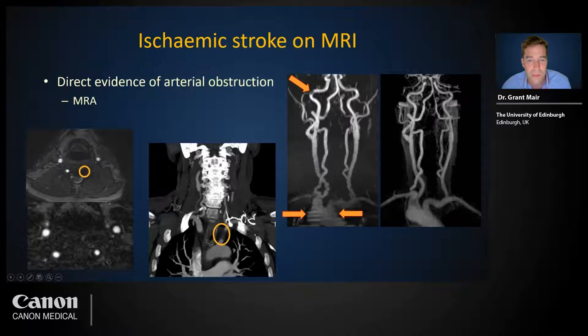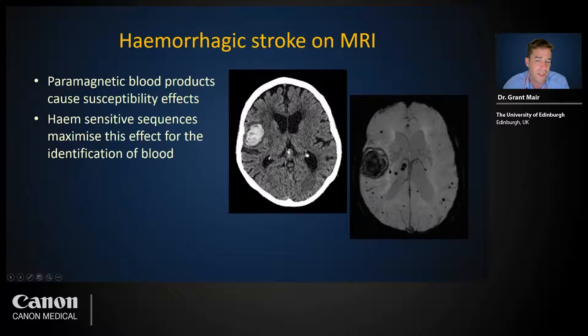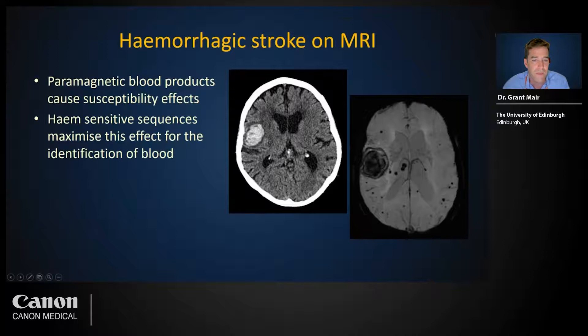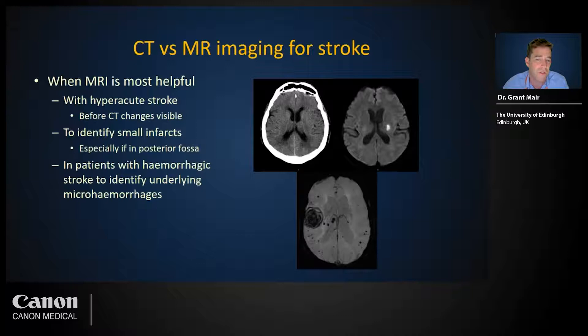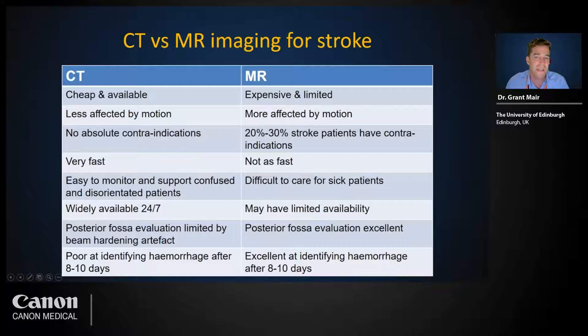Hemorrhage-sensitive sequences on MRI take advantage of the slightly magnetic property of heme to provide imaging highly sensitive for the presence of blood products. In addition to the large acute frontal lobe hemorrhage in this case, note the many chronic micro-hemorrhages visible on the MR image in a patient with amyloid angiopathy that are not visible on CT. Therefore, MRI is especially useful when we need to identify hyperacute changes not yet visible or too small to be easily seen on CT, or when we wish to identify micro-hemorrhages to support a diagnosis of amyloid angiopathy. CT is predominantly used for first-line imaging in stroke because it is cheap, regularly available 24/7, and fast — which is better for confused or disoriented patients.